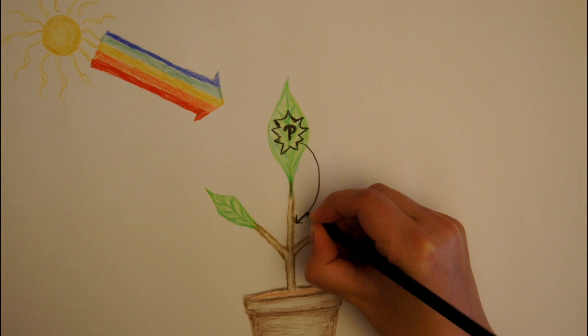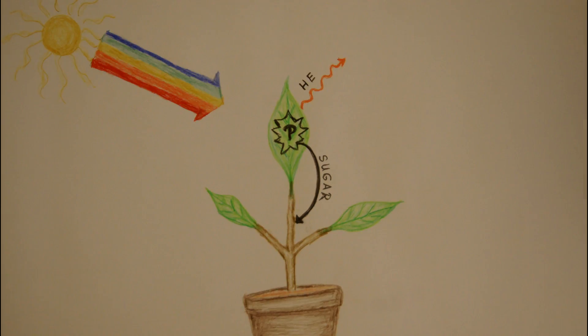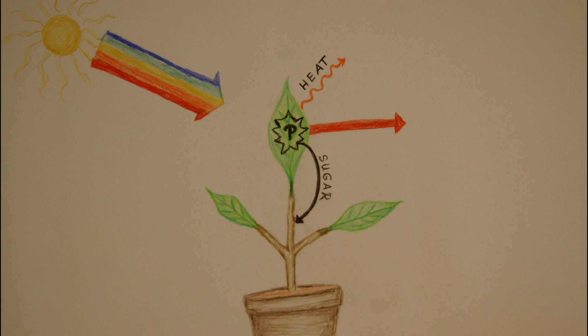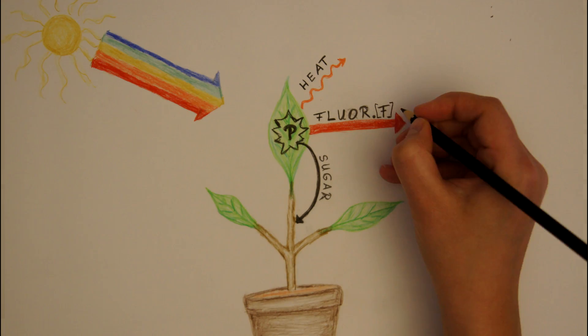The aim of this reaction is to harvest energy and store it as sugar. But some of the light energy is not used and emitted as heat or red light, called chlorophyll fluorescence, short F. Because the red part of the white light from the sun is way stronger than the fluorescence, the fluorescence is not visible to us. But with a little trick we can see it.